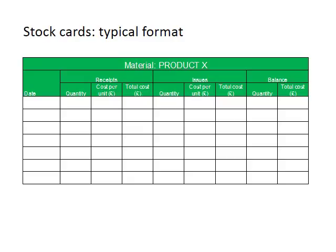To the right of that we have a further three columns where we record issues of stock — again the quantity issued, the associated cost per unit, and the total cost. Lastly we have two columns recording the balance of stock at the end of any transaction: the quantity of stock held at any given time and the total cost associated with that.